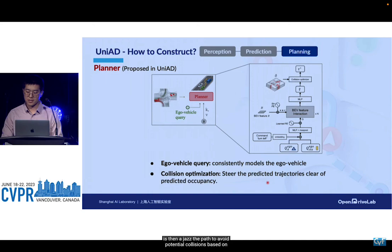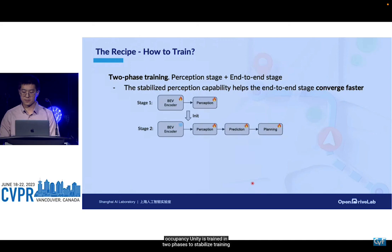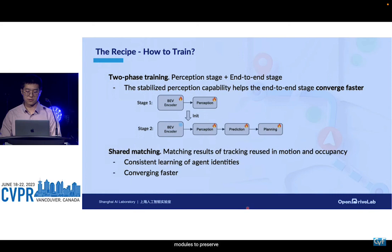UniAD is trained in two phases to stabilize the training process. Also, the matching results are shared across all modules to preserve agents' identity and further speed up convergence.